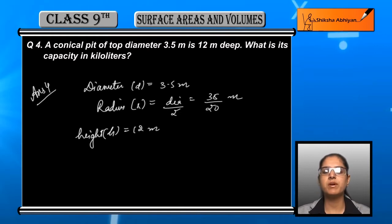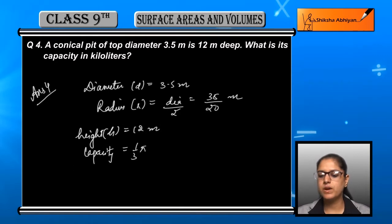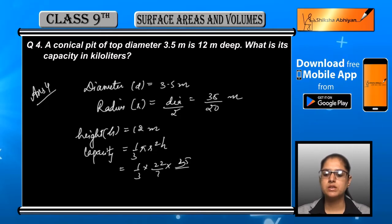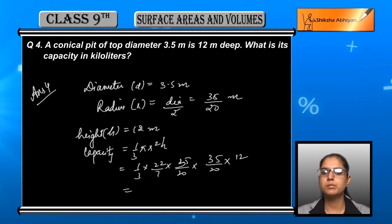Height h of the pit is 12 meters. We have to find the capacity of the pit, so the volume of the pit is equal to 1 upon 3 pi r square h.